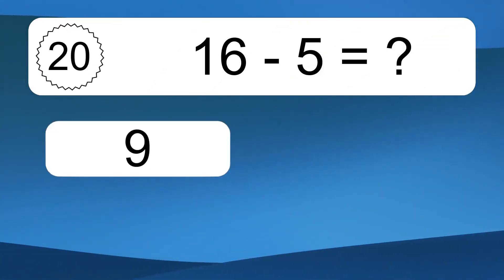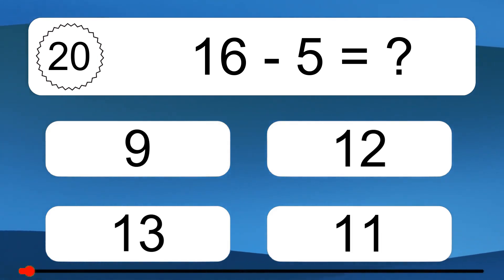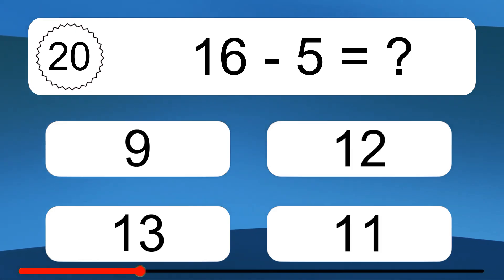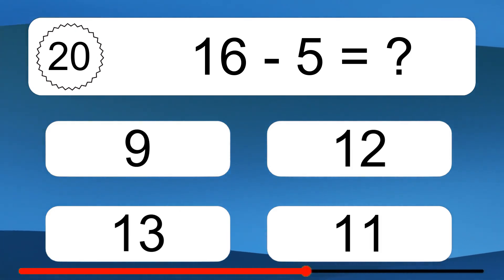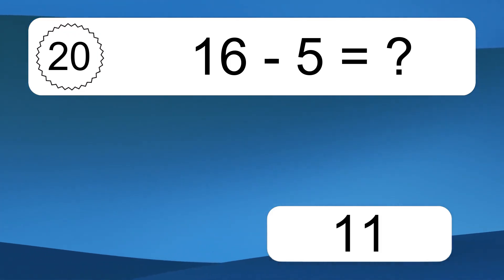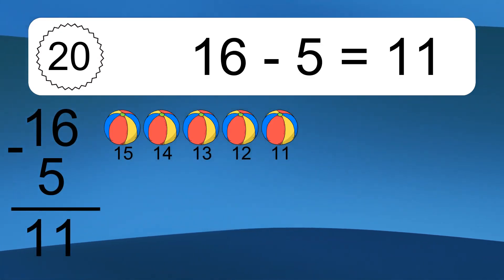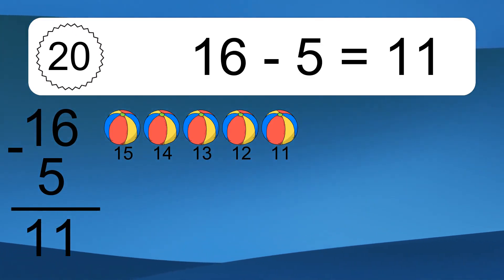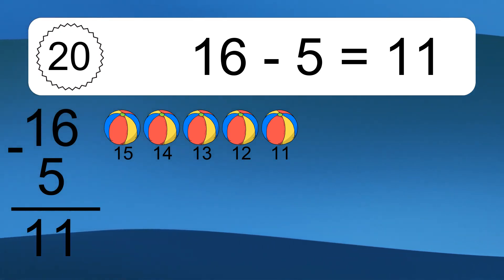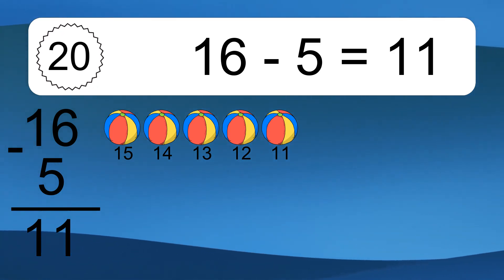16 minus 5 equals what? 16 minus 5 equals 11. Let's count it. 15, 14, 13, 12, 11.